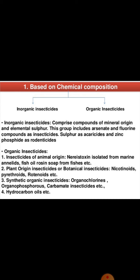Organic insecticides include those of animal origin — such as anorexia toxins isolated from marine animals, fish oil, rosin soap. Plant origin insecticides, also called botanical insecticides, include nicotinoids, pyrethroids, and rotenoids, which are all of plant origin. Synthetic organic insecticides include organochlorines, organophosphates, and carbamates, which are artificially produced organic insecticides.